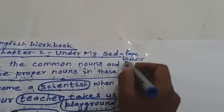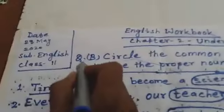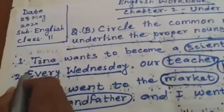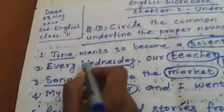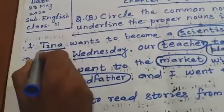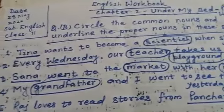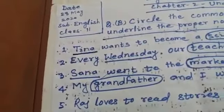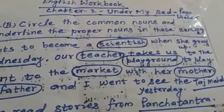Page number — 'Under My Bed' — page number 14 and 15. Question number B: circle the common noun and underline the proper noun in each sentence. Proper noun, as already explained, refers to the specific name of a person, thing, or place. When a common name is indicated, that is a common noun.